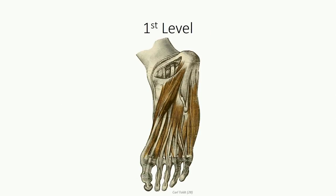Time to discuss the muscles of the foot. We can divide these up into four separate layers from superficial to deep. We'll start with the superficial layer, which has a common origin off the calcaneal tuberosity deep to the plantar aponeurosis. First is the flexor digitorum brevis, found in the central compartment. It originates off the medial aspect of the tuberosity and runs superficial to the long flexor tendons of the flexor digitorum longus.